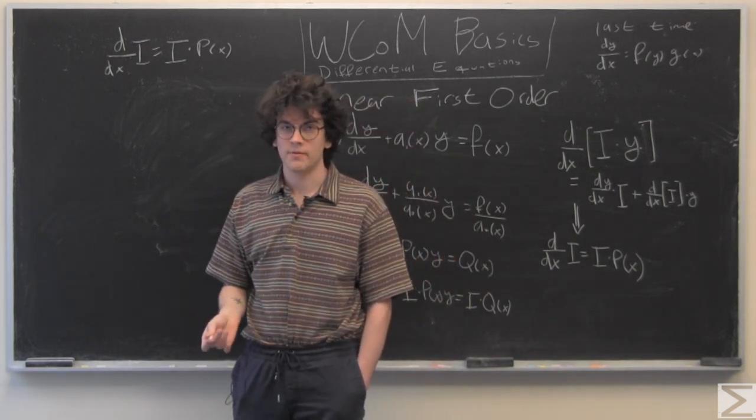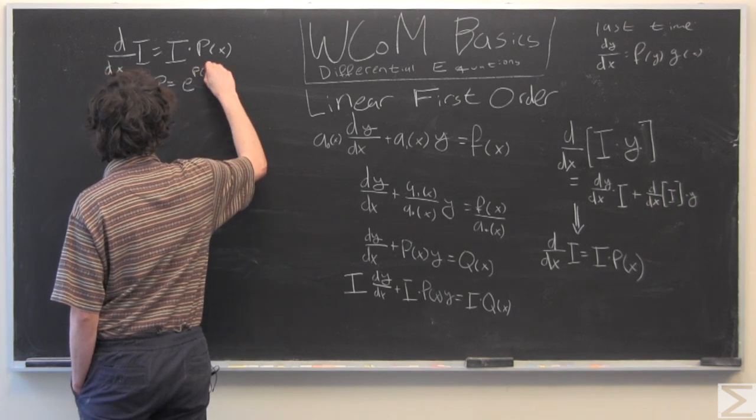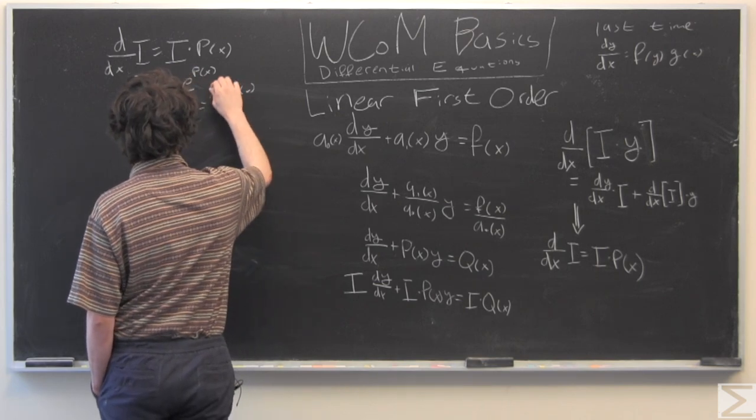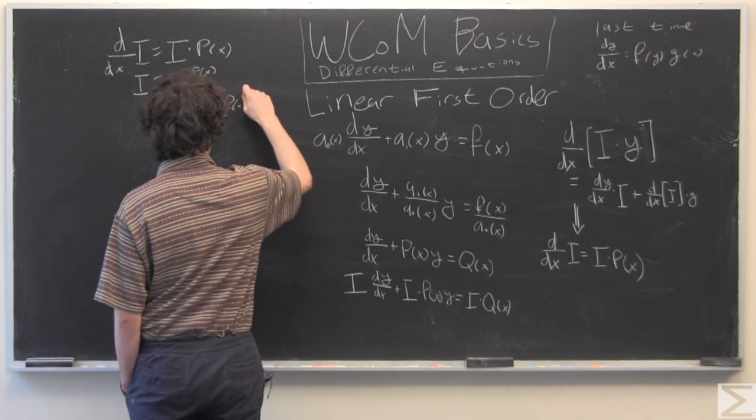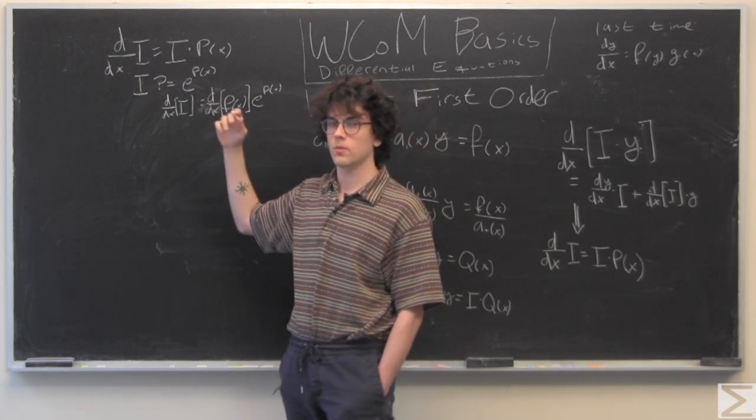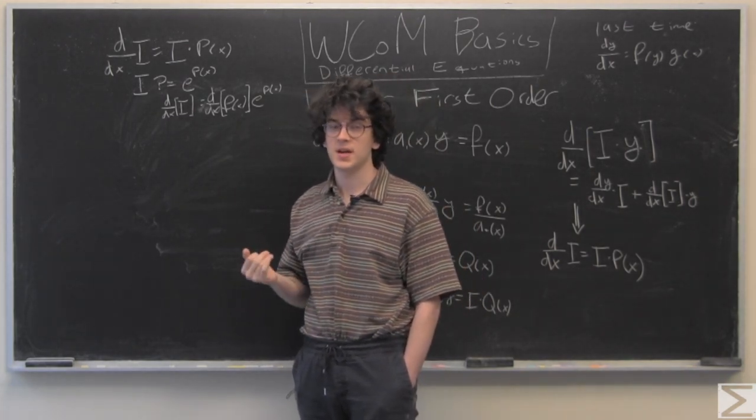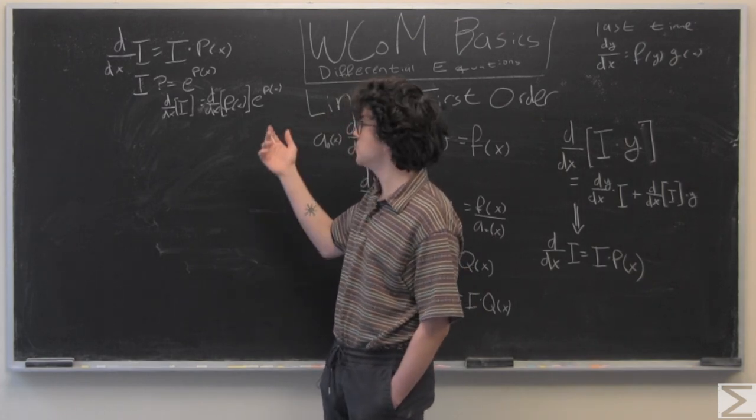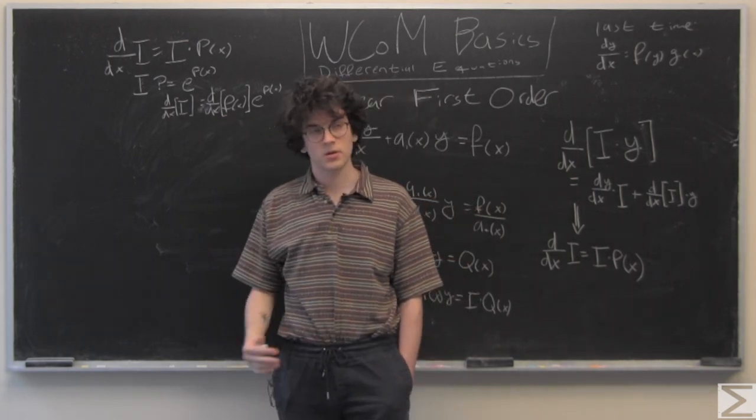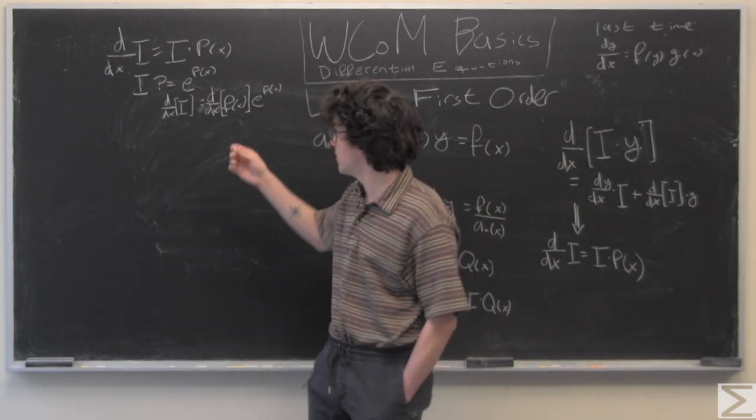And what do we know that returns itself once differentiated is e raised to some power. So, let's try out a few things for i. Here we just have a simple chain rule. Of course, our first guess is going to be that i equals e to the px, which will return e to the px, and then get the derivative of the inner function, which is px. But, if you recall, we don't want this derivative to be in here, so we're going to put in an antiderivative to eliminate that derivative we have here.